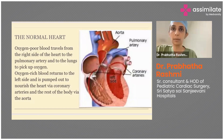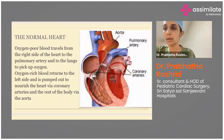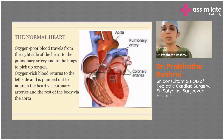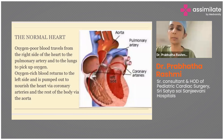You can see two small vessels coming out of the aorta — these are the coronary arteries, and they are supplying the heart itself. Then the aorta supplies blood to the rest of the body.